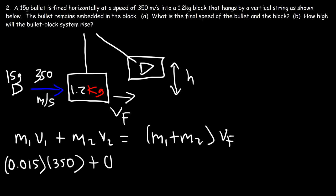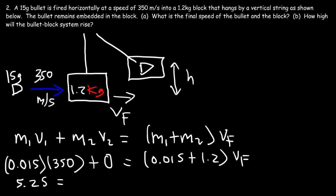The block is initially at rest, so M1 plus M2 is 0.015 plus 1.2. Multiplying 0.015 by 350 gives 5.25, and 0.015 plus 1.2 is 1.215. So v final is 5.25 divided by 1.215, which gives a final speed of 4.321 meters per second.